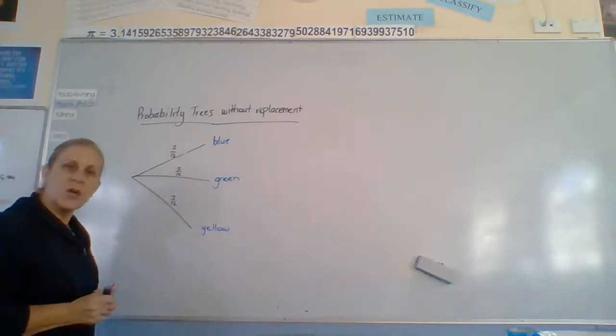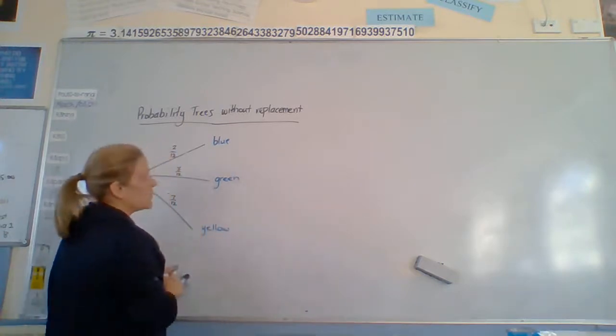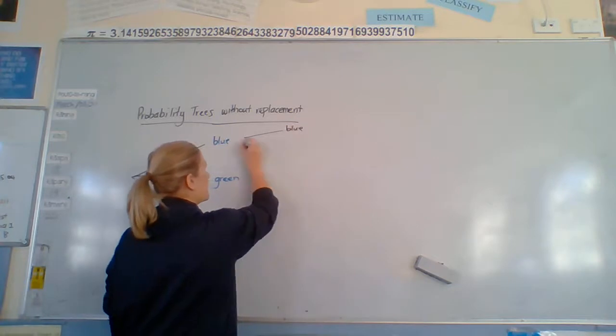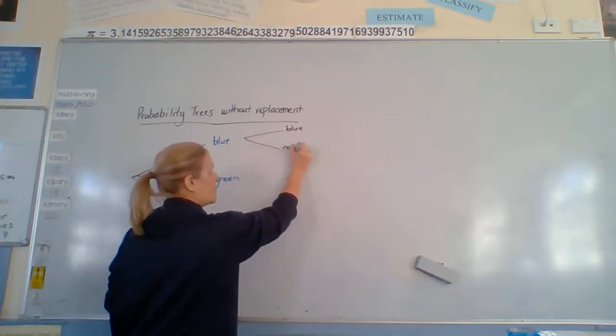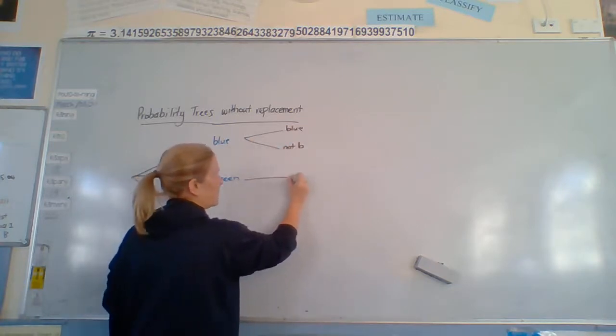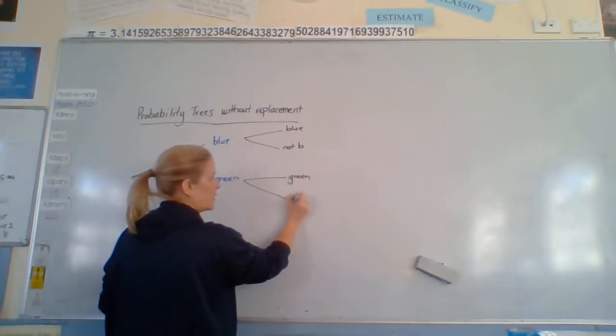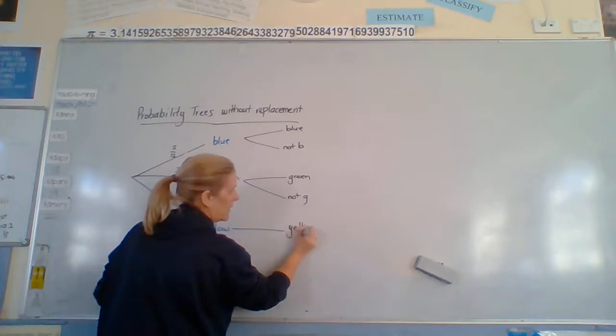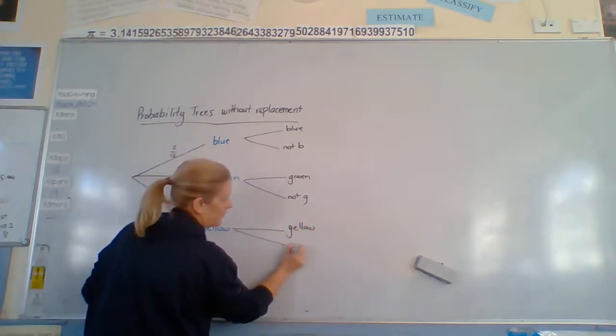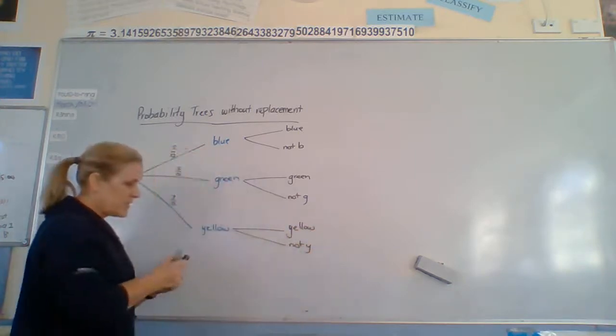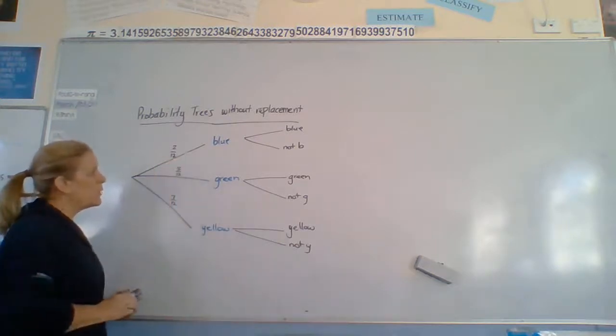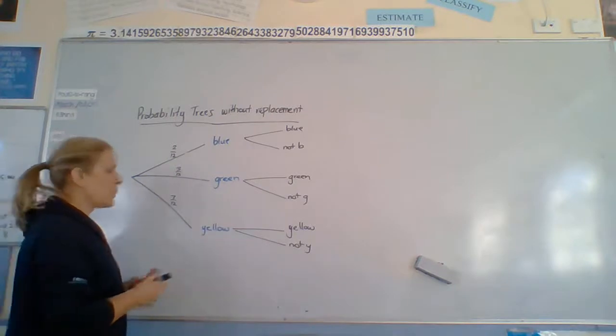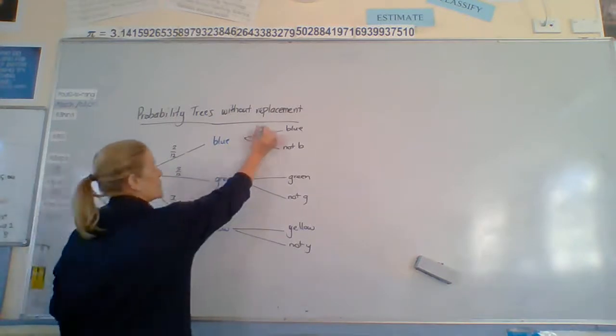Then we were wanting to know what's the probability of getting a double. So our next branches were blue or not blue. And the probabilities have to reduce because here we had 2 blue. We've now kept this blue one out, so now there's only one blue left to be able to choose. One blue out of 11 left in the bag.